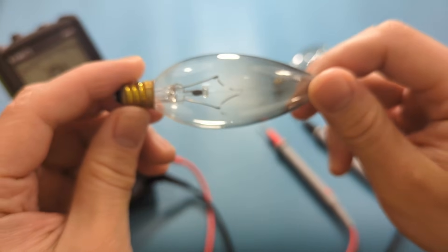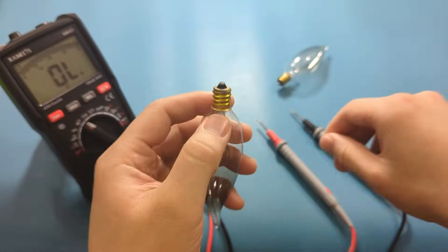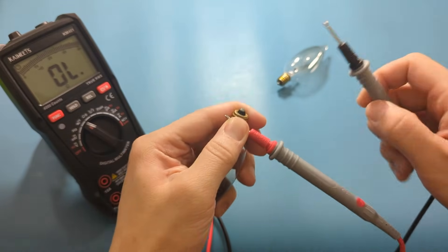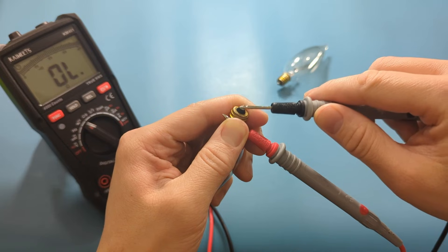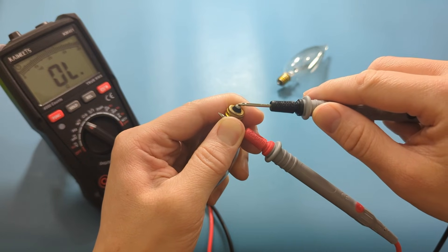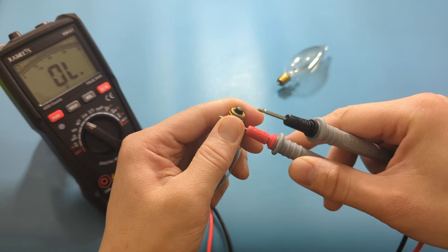I don't think the continuity test will pass, but let's check it anyway. Hold one of the probe leads against the threads. Touch the other probe lead to the tip. We're not getting any continuity. This is a bad bulb.